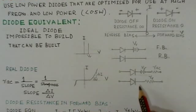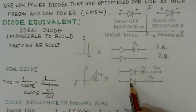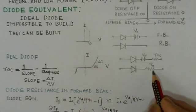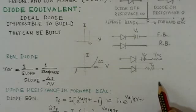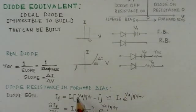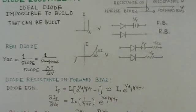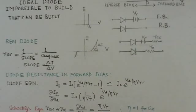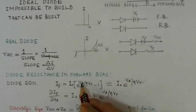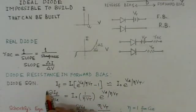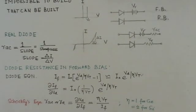In reverse bias, the equivalent circuit is an ideal diode with a very high reverse resistance. Now, to find the diode's AC resistance in forward bias — that is, when the diode is forward biased — there is a very important relation known as the Shockley equation, which gives the value of the dynamic AC resistance of the diode when it is forward biased.